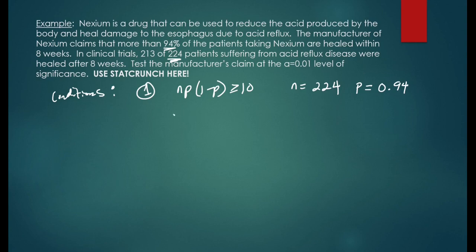We'll plug in the values. 224 times 0.94 times the quantity 1 minus 0.94 equals a value of 12.6. And that's clearly greater than or equal to 10. Condition 1 is met.